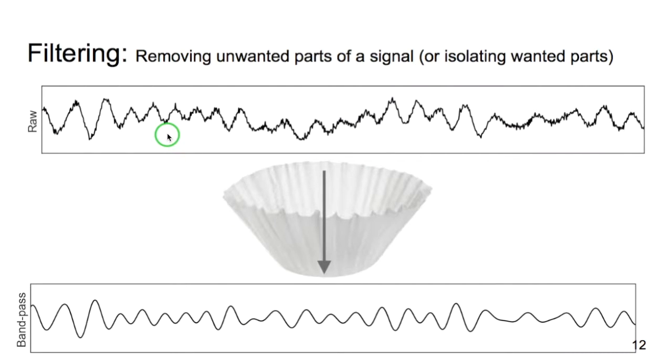So our next topic is filtering, which is an example of convolution. So why do we filter data? We filter data in order to either remove the unwanted parts of the signal or extract the wanted parts of the signal.